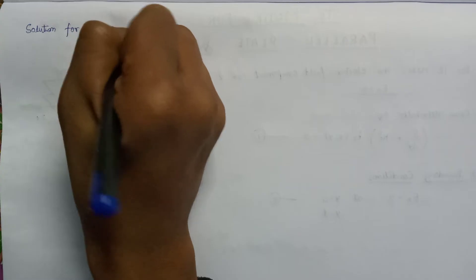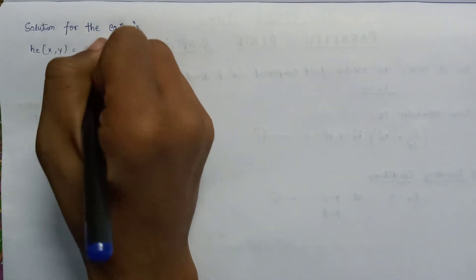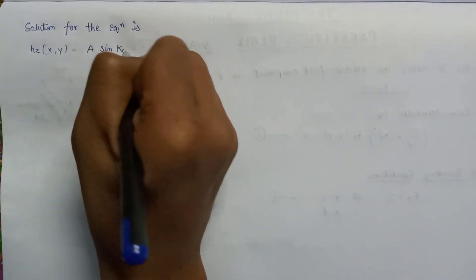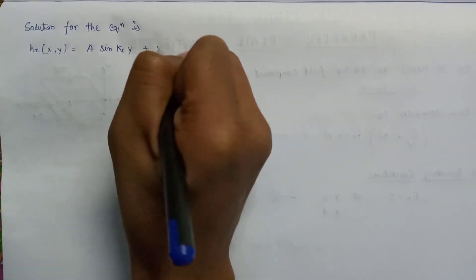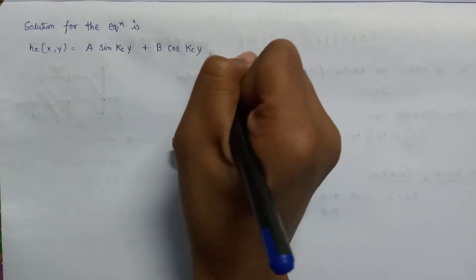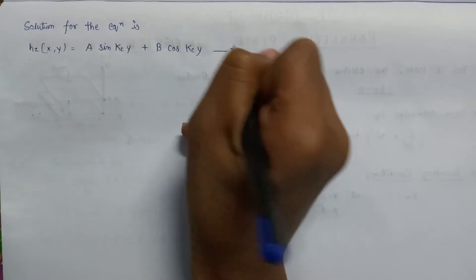The solution for the Helmholtz equation is given as: hz(x, y) equals A sin(Kc·y) plus B cos(Kc·y). This is equation number 3.